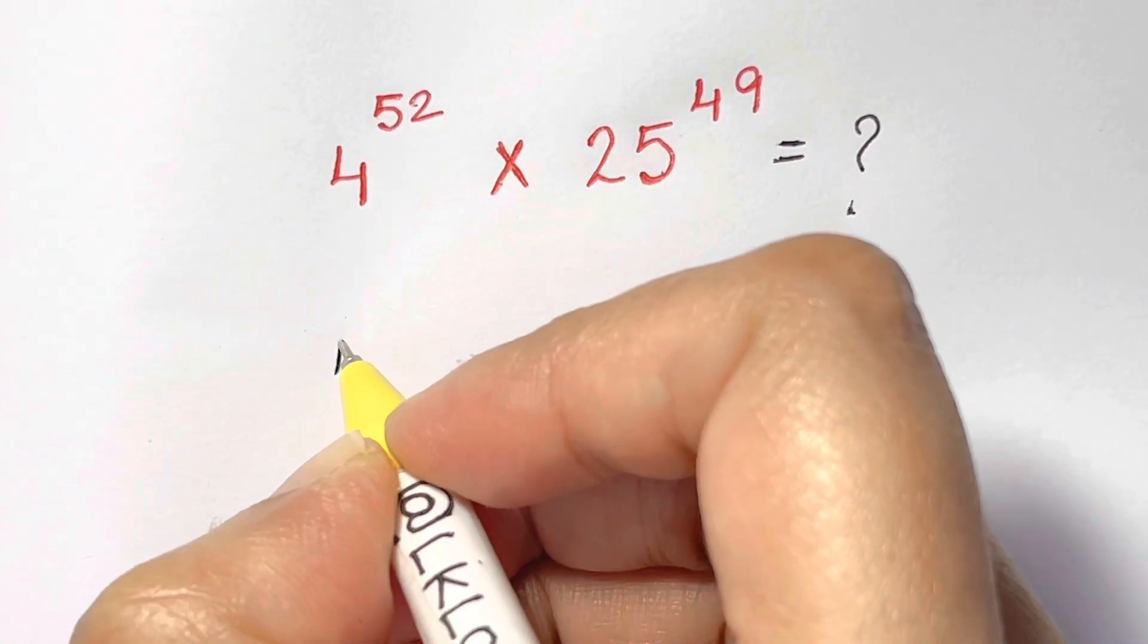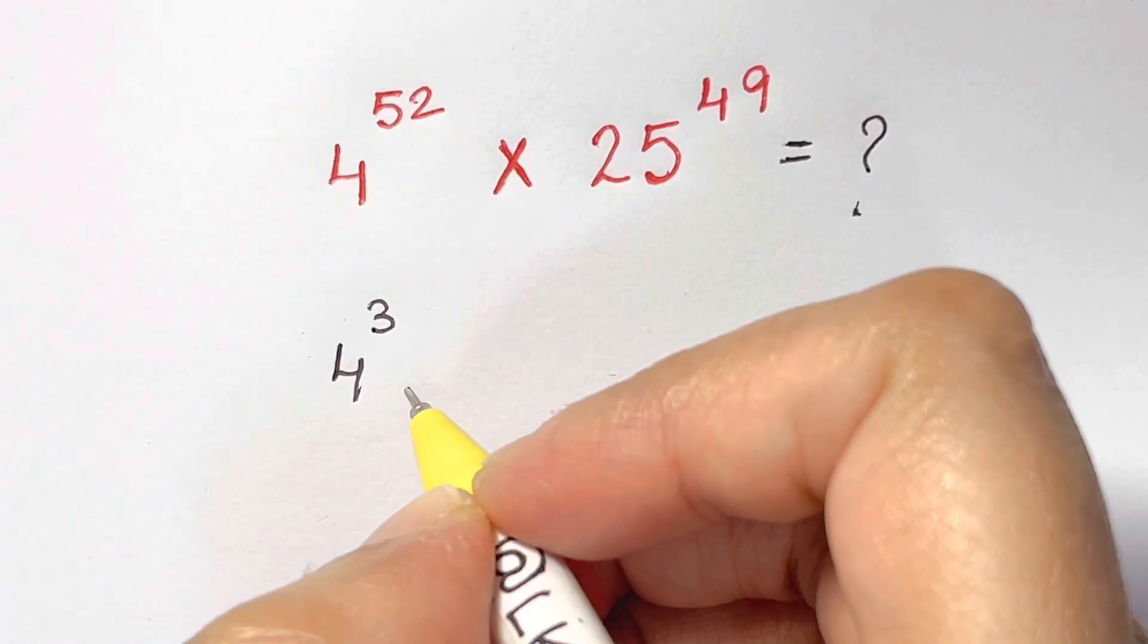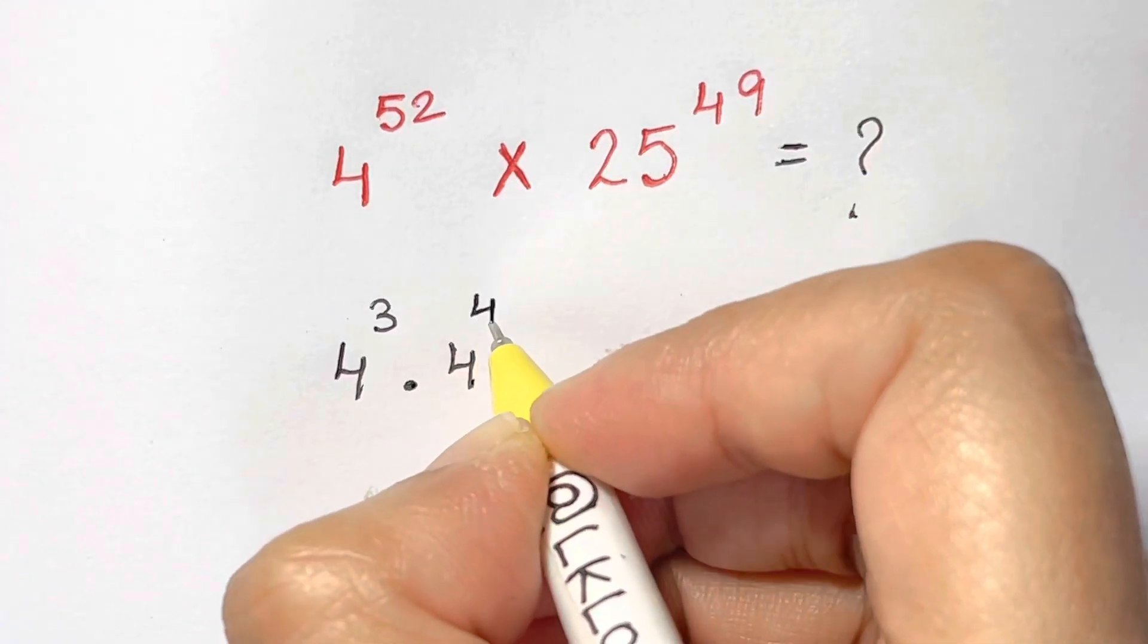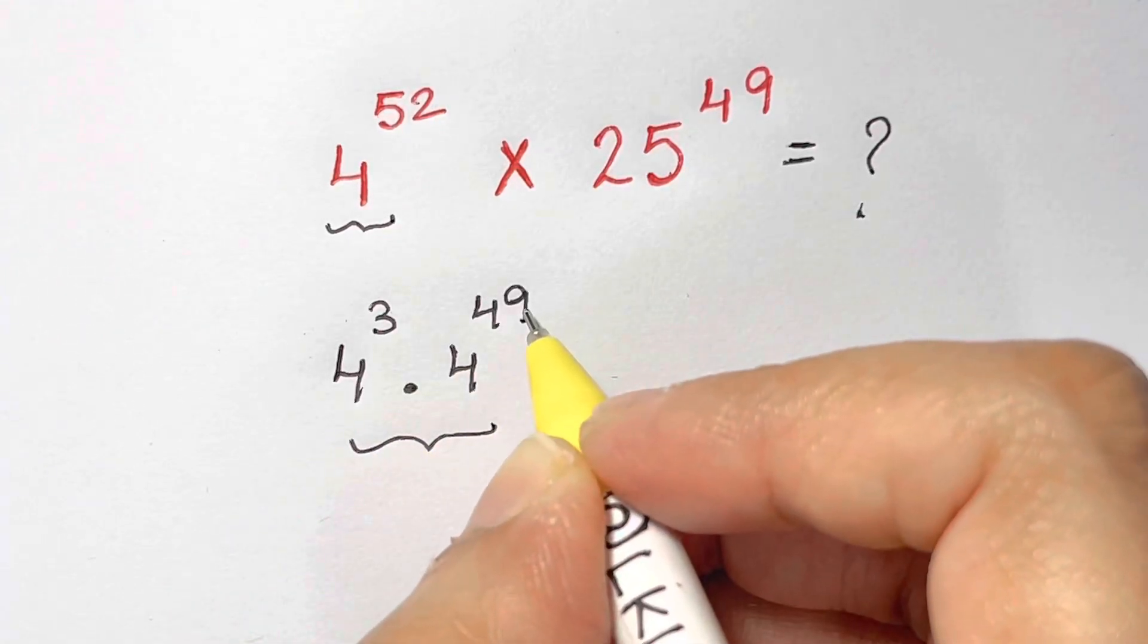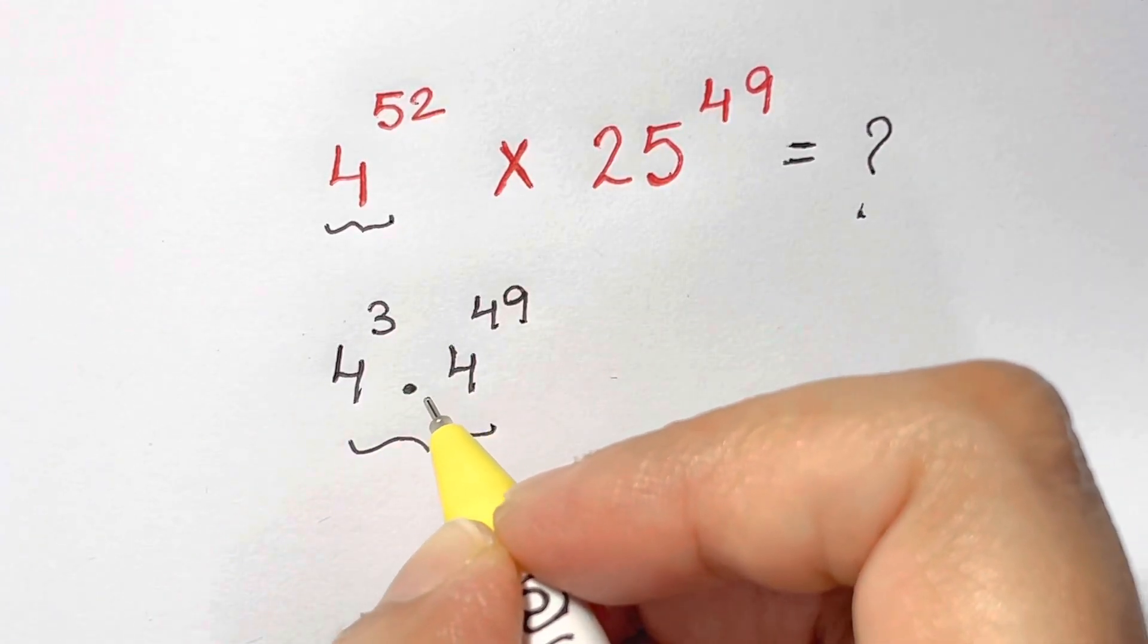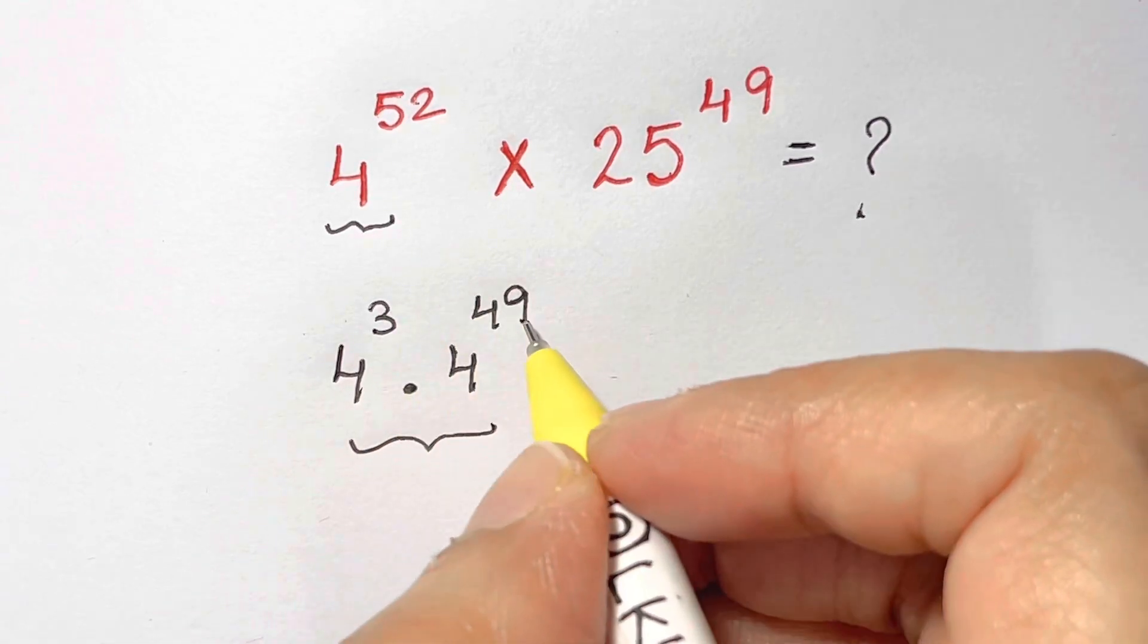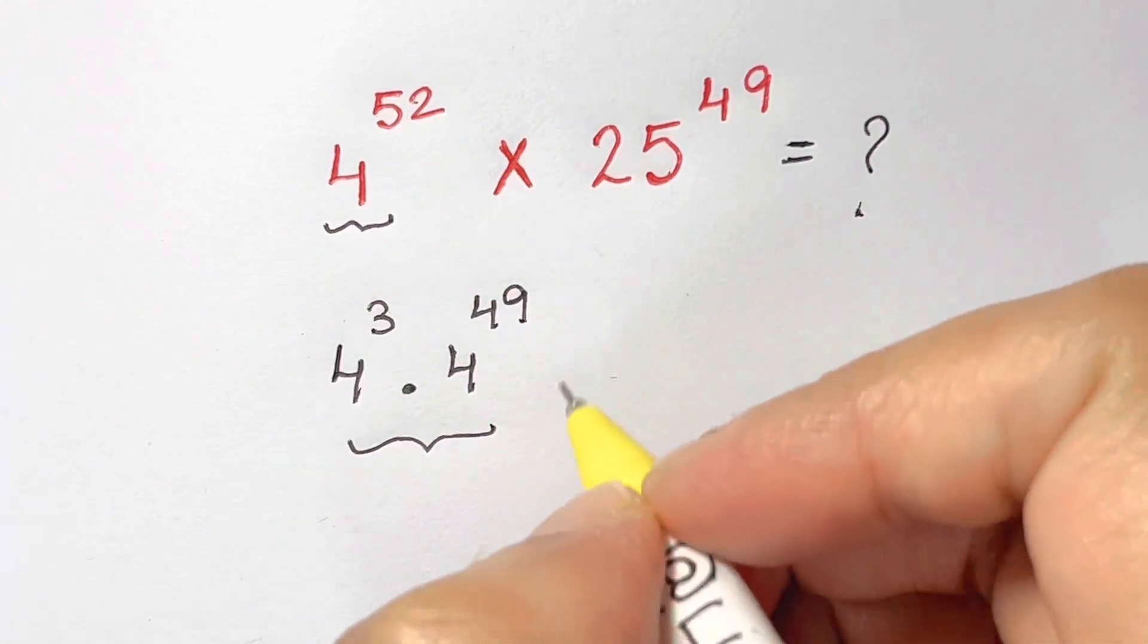This term can be written as 4 cubed times 4 to the power of 49, so you can have same basis and multiplication in between means adding the powers. So 3 plus 49 gives you 52 back. Now I have times 25 to the power of 49.